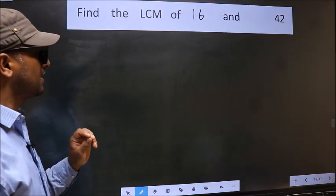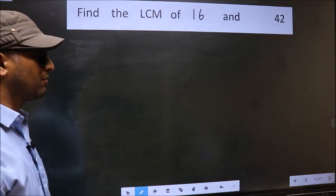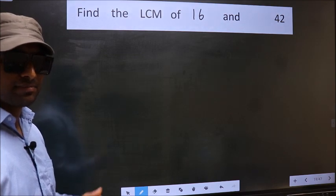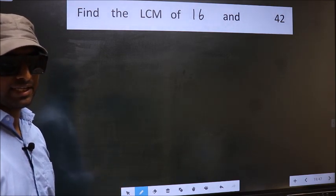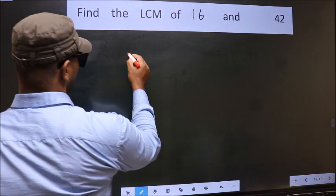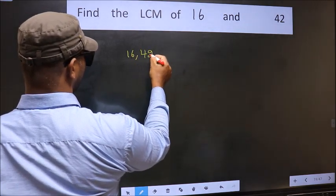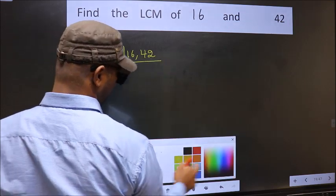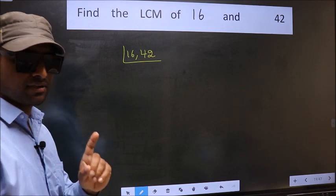Find the LCM of 16 and 42. To find the LCM, first we should frame it in this way — that is 16 and 42. This is your step 1.